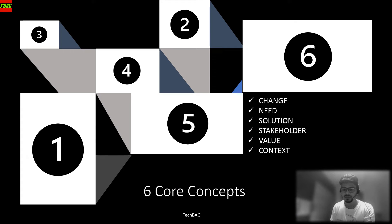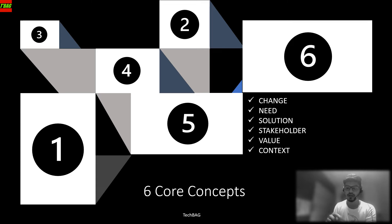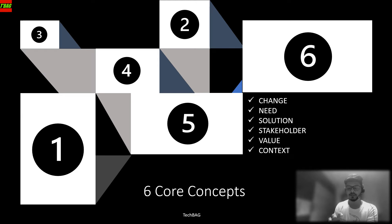The six core concepts define the key areas in which a BA would work. I've posted them on screen — there is no fixed sequence for doing them, but there is a relation between them. You can start from any concept, but it will have a relation to another. For example, you can start with stakeholder and relate it to context, or start with value and relate it to needs. The six core concepts are interrelated; you cannot skip any of them.